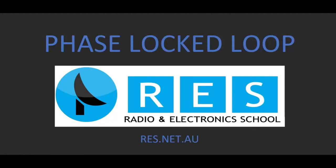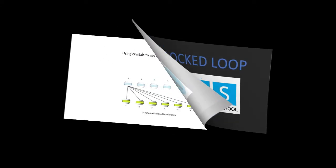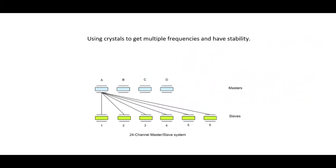Hello and welcome to the Radio and Electronic School. I'm Ron VK2DQ, and in this tutorial we're going to be discussing the phase locked loop. There was a time not all that long ago when multi-channel radio systems weren't very common, because there was not a great need for them. But if multi-channel radio systems required stability and accurate frequency control, the only way to do it was with crystals.